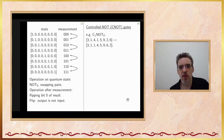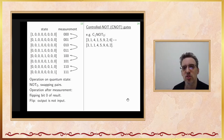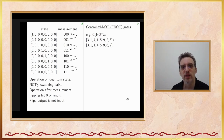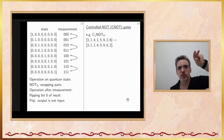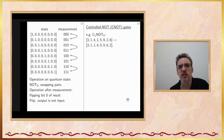Controlled-NOT is the next gate. For example, C1-NOT-0 does a NOT on qubit 0, controlled by qubit 1. In the vector, it flips adjacent pairs only in groups where bit 1 of the index is set. On the indices: bits q2, q1, q0 become q2, q1, q0 XOR q1. If q1 is 1, then q0 is flipped; otherwise q0 is unchanged. Similarly, a NOT on qubit 0 controlled by qubit 2 does nothing in the first four positions (where bit 2 is 0), but swaps adjacent pairs in the last four positions (where bit 2 is 1).